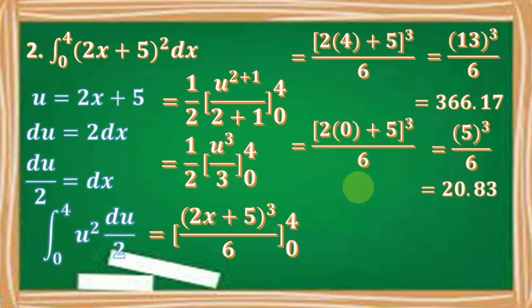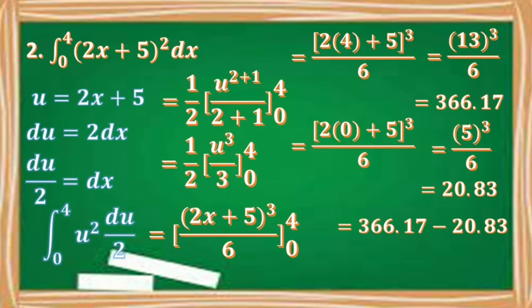Then subtracting 20.83 from 366.17, we have 366.17 minus 20.83, giving us a difference of 345.34, which is our final answer.